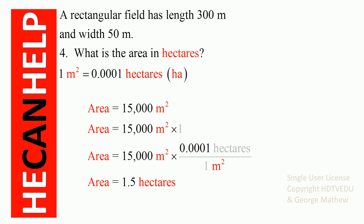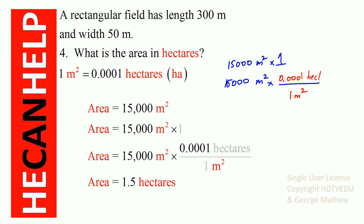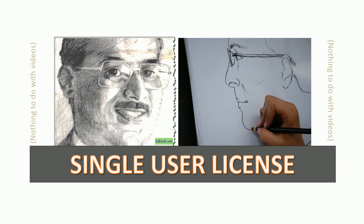The next question is: what is our area in hectares? Again, 15,000 square meters — multiply by one, where one meter squared equals 0.0001 hectares. Meters squared cancel, and we get 15,000 times 0.0001, which is 1.5 hectares. This is George Matthew signing off — good luck!